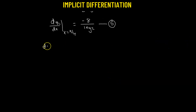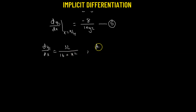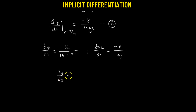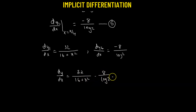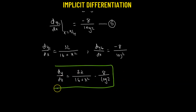Combining both results, dy1/dx evaluated at x = π/4 is 32/(16 + π²), and dy2/dx evaluated at x = π/4 is −8/log 2. Therefore the final answer is dy/dx = 32/(16 + π²) − 8/log 2.